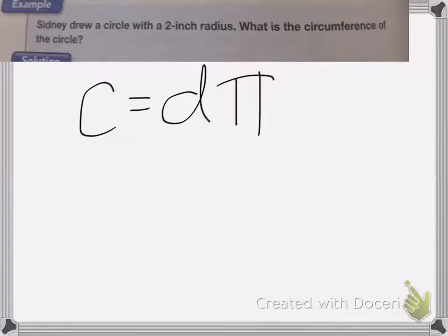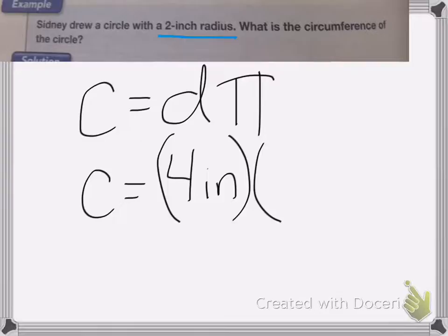So again, let's plug in the numbers. Circumference equals diameter, and here it gives us a 2-inch radius. So the diameter, remember, is twice the radius. So my diameter is going to be 4 inches, and I'm going to multiply that by pi, which is 3.14.